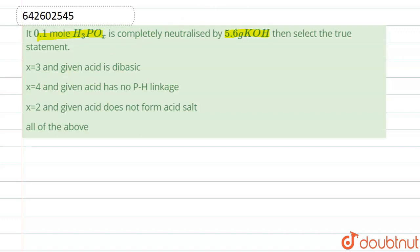Here first we have to convert 5.6 grams into moles. So number of moles of KOH - we know that given mass is 5.6 grams and molecular mass is 56, so the number of moles is 0.1. We have to find the value of x.